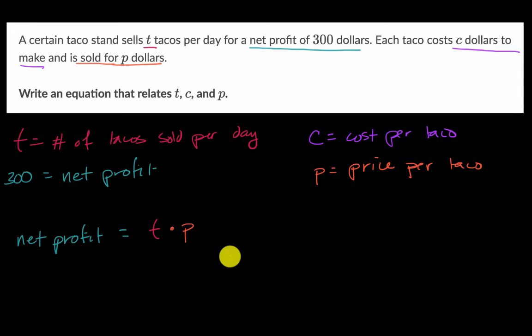But of course you have to also subtract out your cost. Well, what's going to be your cost? Well, it's going to be the number of tacos times the cost per taco. That's how much we're going to spend. So the number of tacos times the cost per taco.